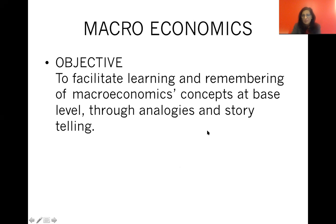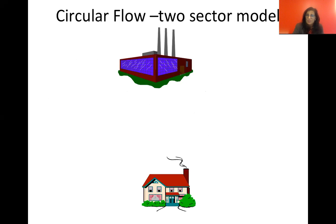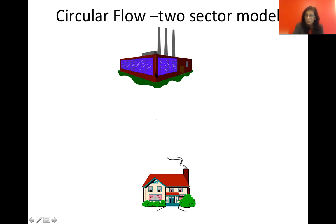We'll be taking you through strategies to learn and remember macroeconomics concepts at a base level through storytelling and analogies, so you can remember more ideas. In this session, we're going to cover circular flow, GDP, and business cycles. Economics is all about production, consumption, and exchange, so at a macro level we can split the economy into two major sectors: the producer sector — firms — and the consumer sector — households.